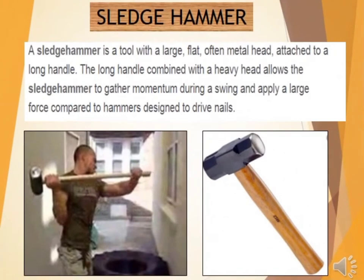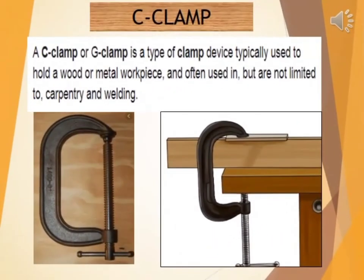Then, we have the Sledgehammer — a sledgehammer is a tool with a large, flat metal head attached to a long handle. The long handle combined with a heavy head allows the sledgehammer to gather momentum during a swing and apply a large force compared to a hammer designed to drive nails. Next, we have a C-Clamp or G-Clamp — this is a type of clamp device typically used to hold a wood or metal workpiece, commonly used in carpentry and welding.